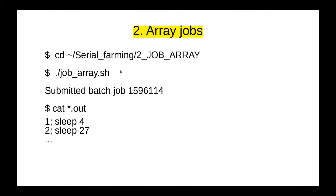Let's consider the second example: job arrays. This is how you can test it — by changing to this directory and running the script job_array.sh. You can see right away a difference from the previous case: before you got multiple lines with multiple job IDs; here we get only one. This job ID describes the whole job array. Job array is a feature of the SLURM scheduler, and I will show you in the next slide how to use it.